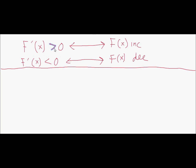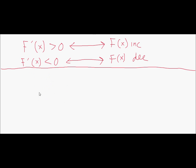Knowing that f prime is positive does not tell us anything about the second derivative. For example, x squared plus two is always positive as a function, but its derivative changes from negative on the left side to positive — so knowing f is positive doesn't tell us anything about its derivative. Knowing f prime is positive does not tell us anything about f double prime.